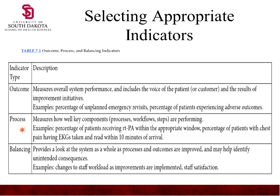Process measurements are tactical — they measure how well key components and workflow steps were performed, like the five steps to get a patient out of the emergency room. Examples include the percentage of patients receiving tPA within the appropriate window, or the percentage of patients with chest pain having EKGs taken within 10 minutes of arrival.